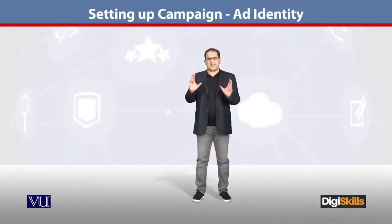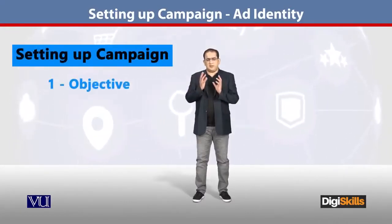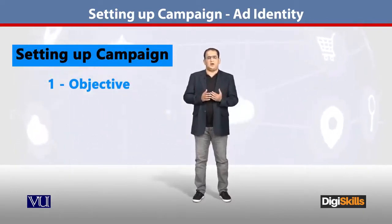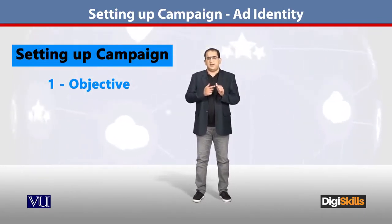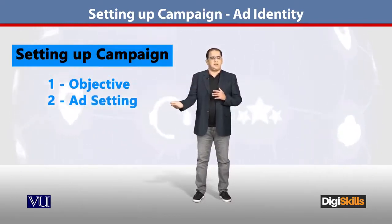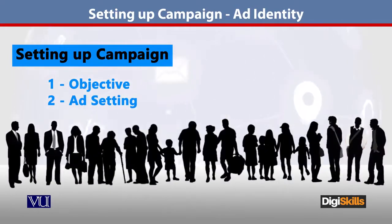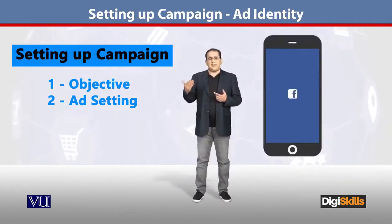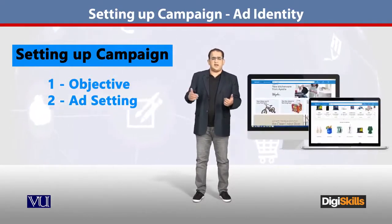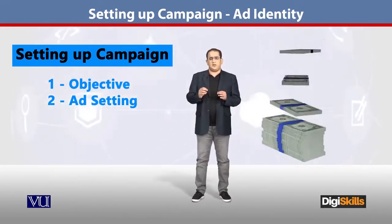We have covered two sections of the campaign. The first section was linked with the category of the campaign. The second part was setting the ad — we want to target the audience, target the age group, reach out to mobile devices, website, desktop, and lastly we told how much we are going to spend.